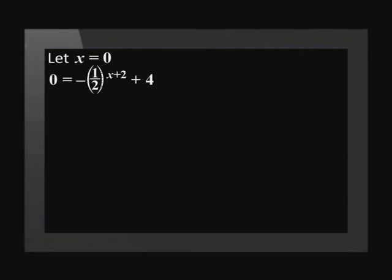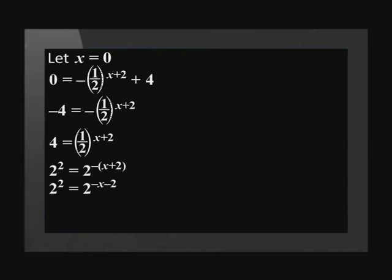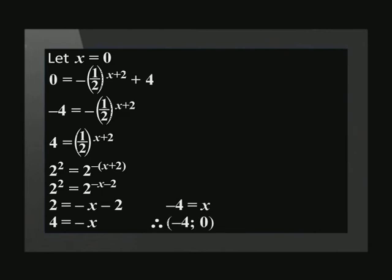The last step is to find the x-intercept. The graph lies below the asymptote and the asymptote is above the x-axis, so there will be an x-intercept. We determine the x-intercept by making y equal to 0, then add 4 to both sides to get negative 4 equals negative open bracket one-half closed bracket to the power of x plus 2. Dividing both sides by negative 1 gives us 4 equals one-half to the power of x plus 2. Using laws of exponents, we rewrite 4 as 2 to the power of 2 and one-half as 2 to the power of negative x plus 2. Equating the exponents gives us 2 equals negative x minus 2, and adding 2 to both sides gives 4 equals negative x. Therefore x equals negative 4, and the x-intercept is (negative 4, 0).